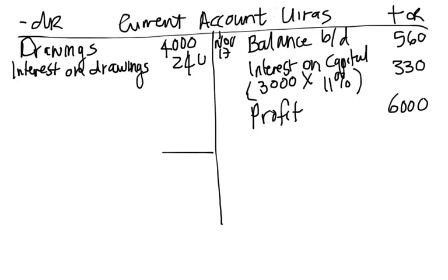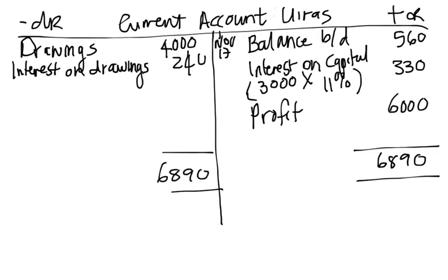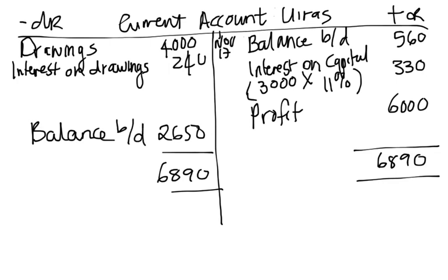We now find the closing balance. The credit side total is the largest: $560 + $330 + $6,000 = $6,890. Subtracting the debit items — $4,000 drawings and $240 interest on drawings — gives a closing balance carried down of $2,650 for Uiras.